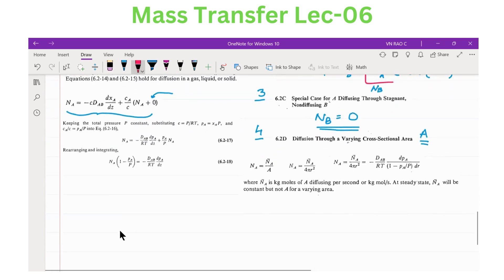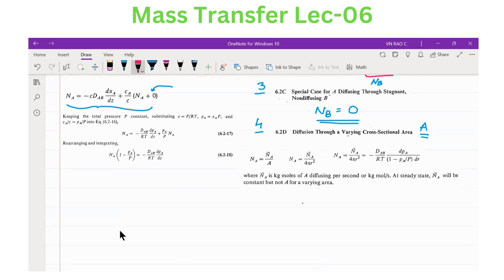The last one is varying cross-sectional. If suppose there is a sphere of naphthalene. I think you can imagine what is naphthalene, it gives a very good smell. We keep it in clothes. It diffuses in the air, bulk of the air. But here, the area is not constant. It keeps on changing. Then we write NA equals NA bar by A. This A is 4 pi R square because as it is diffusing, the radius keeps on coming down.